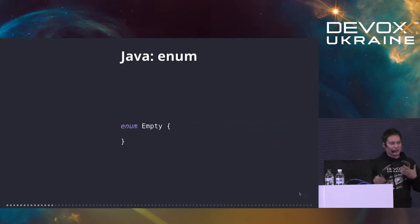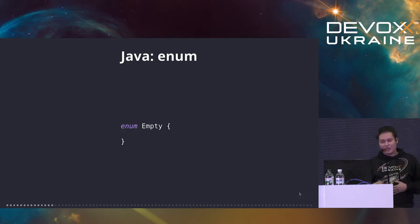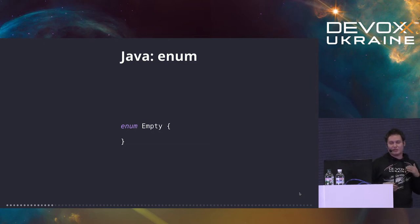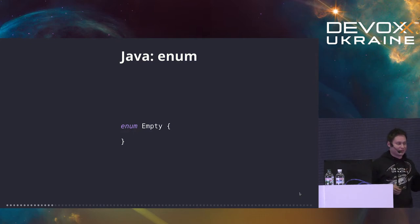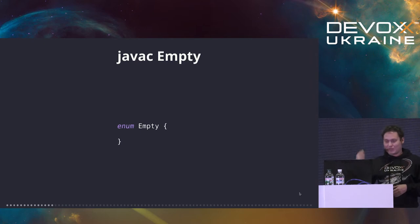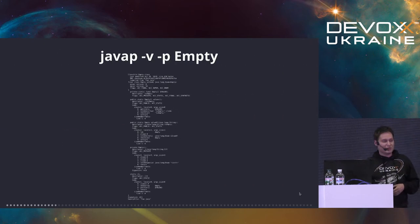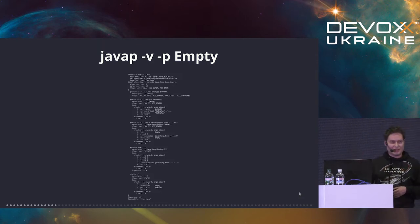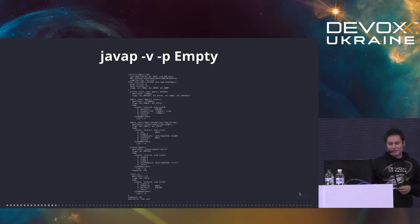Now we have another simple example to warm up a bit. We have an enum — this time we call it 'Empty' to really be sure that it's going to be empty. Who agrees that this enum is empty? There are no constants in it — just curly braces. We compile it, we decompile it. It couldn't be empty again because every class in Java should have at least a private default constructor.